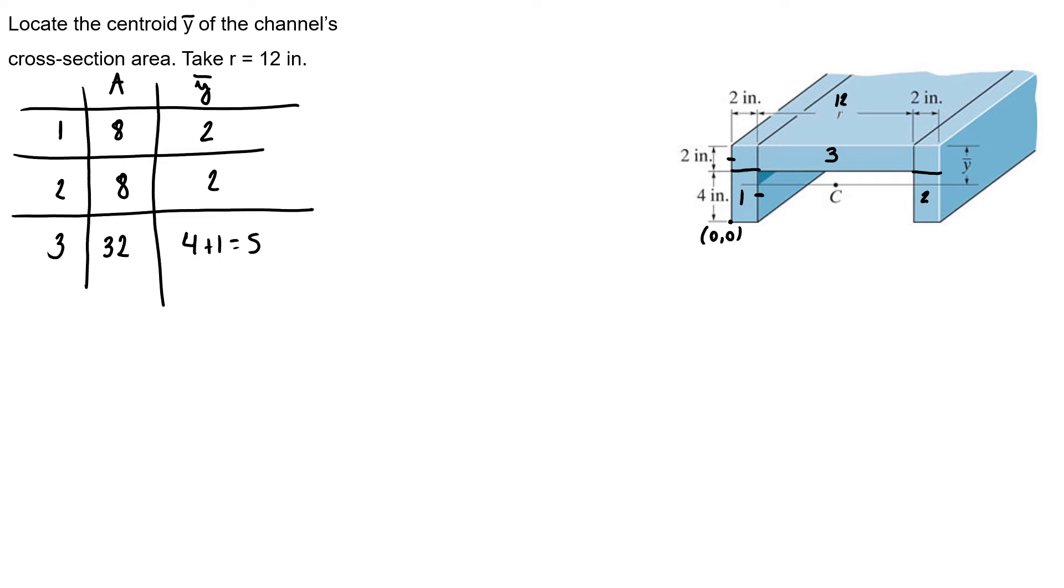So, in order to find my centroid, I have to do the sum of areas times my centroid is equal to each area times its centroid.